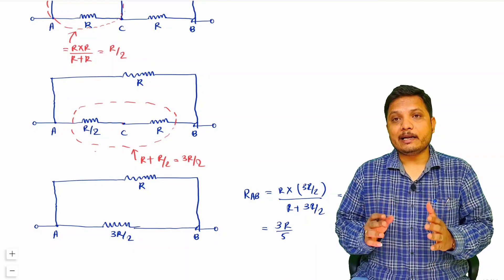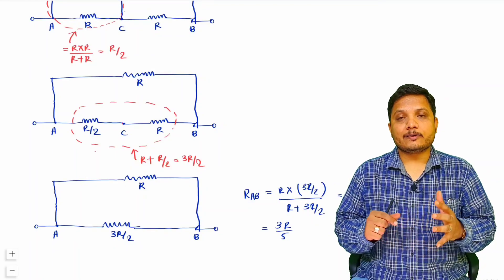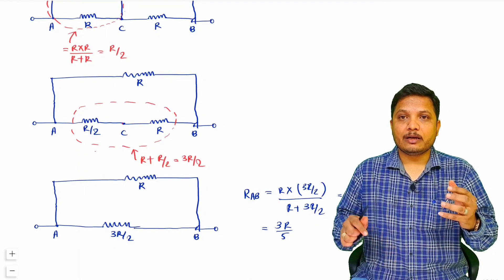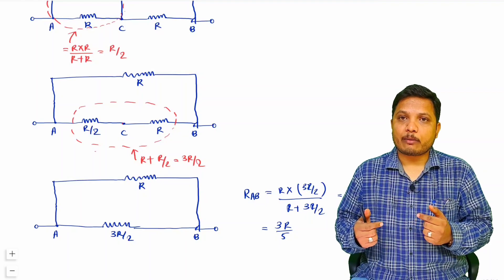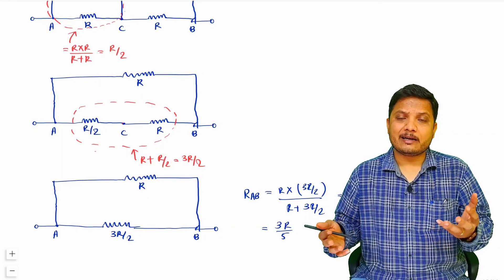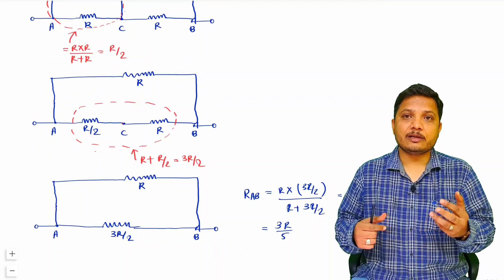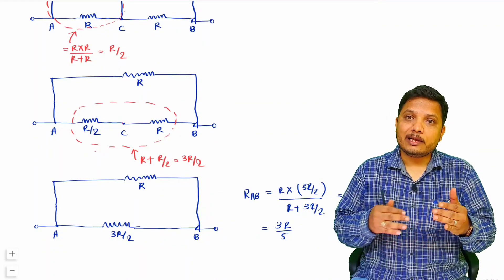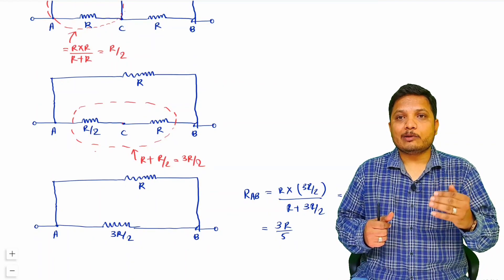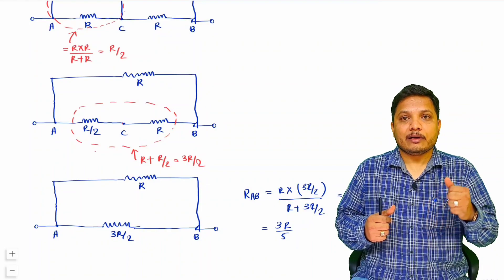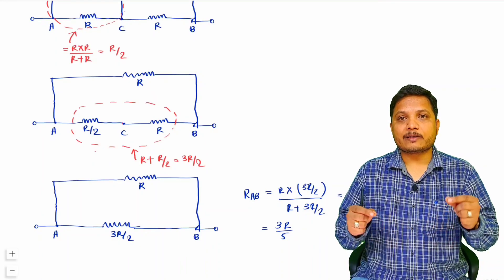That is how we can find the equivalent resistance between two terminals for a given network. I have solved problems here based on redrawing and visual simplification. There will be a few more videos solving problems based on star-delta and delta-to-star conversion, as well as examples based on symmetricity of the network — all three categories to give you a better idea of how to calculate equivalent resistance. I hope you have understood this. If you have any further queries, please place them in the comment box and I will be happy to help. Thank you for watching.